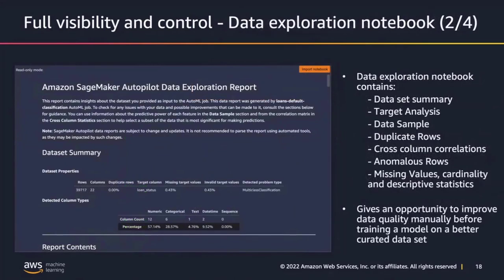The data exploration notebook essentially contains a dataset summary, target analysis, a sample of the data, whether you had duplicate rows, cross-column correlations — it performs a Pearson correlation analysis — anomalous rows, missing values, cardinality, and descriptive statistics of the dataset you uploaded. This is the opportunity to improve the quality of your data before you start training.